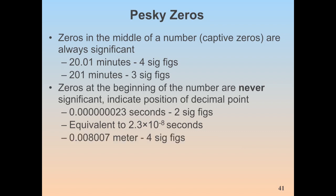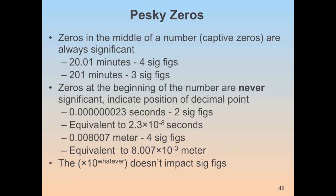For example, 0.008007 has those two zeros between the 8 and 7 — those are captive zeros, so they're significant. The 8 and 7 are significant, giving four sig figs. The leading 0.00 are just placeholder zeros and are not significant. We can equivalently write this as 8.007 × 10⁻³ meters. The ×10 to any power does not impact the number of sig figs.